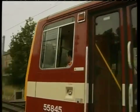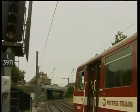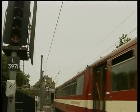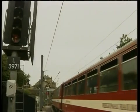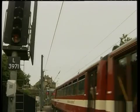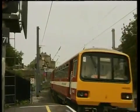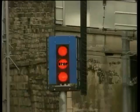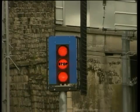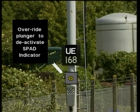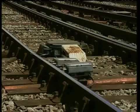If you're authorised to pass a signal at danger, you may proceed according to the signaller's instructions, cancelling the AWS warning provoked by the SPAD indicator magnet and ignoring the indication given by the SPAD indicator. If, in giving you authority to pass a signal at danger, the signaller instructs you to depress the override plunger, carry out this procedure to deactivate the SPAD indicator and suppress the AWS magnet before moving the train.